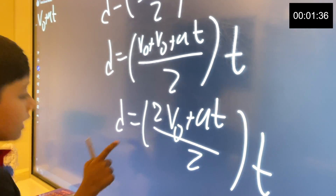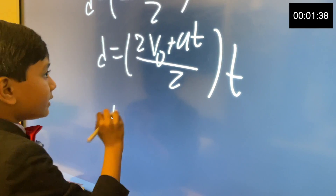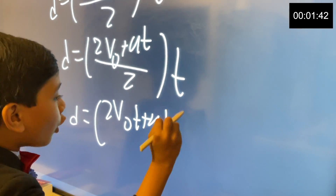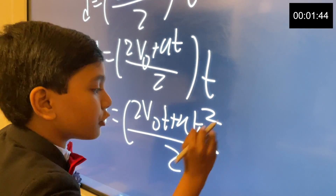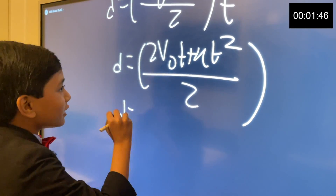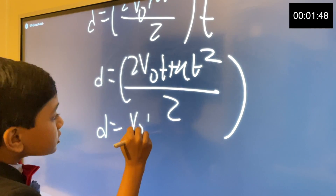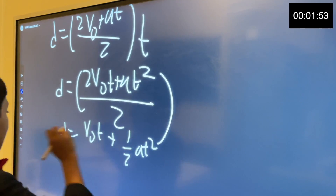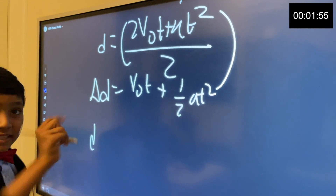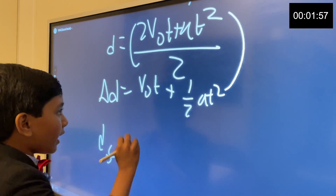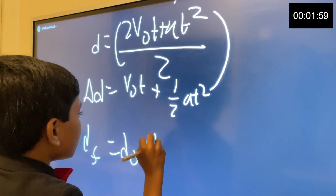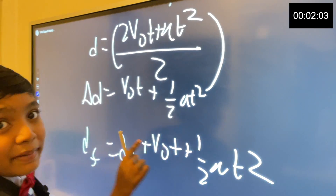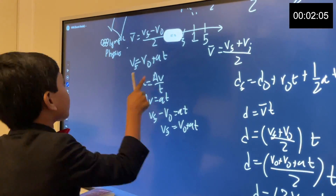And then that gets us to... I was trying to curl my hair. Over two. I cannot stop for anything here. So V nod T, and then we divided this whole thing by two, so half AT squared. I forgot to overcomplicate it because I want to get in the textbooks! So VF equals D nod plus V nod T plus half AT squared, baby! Alright! That's our third one done!